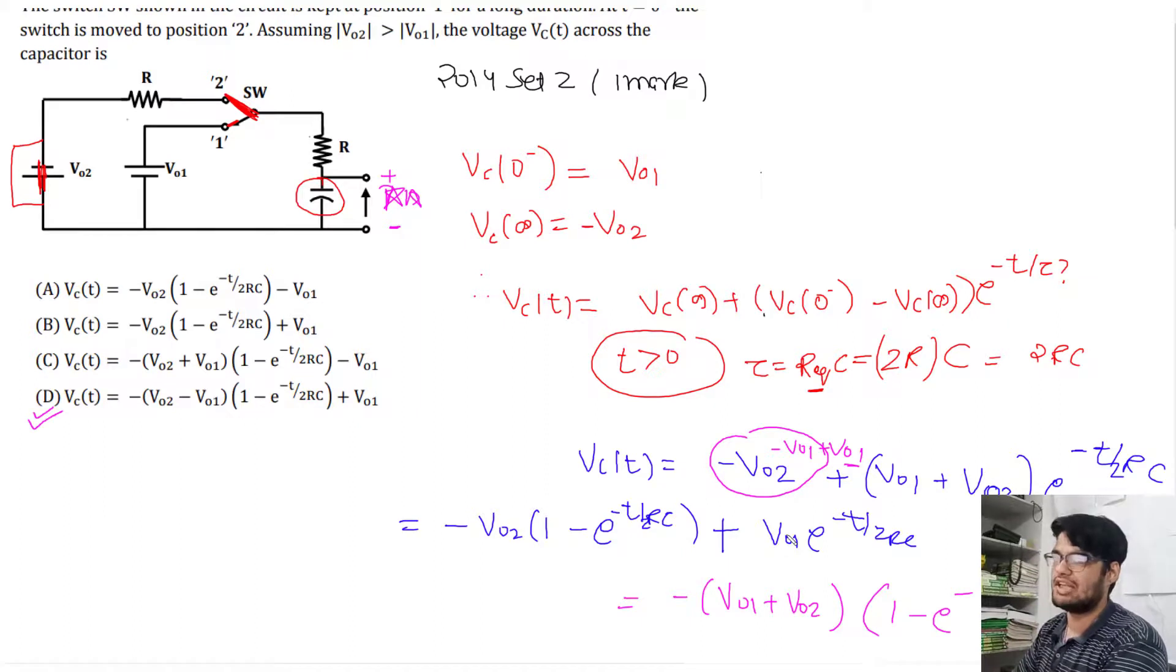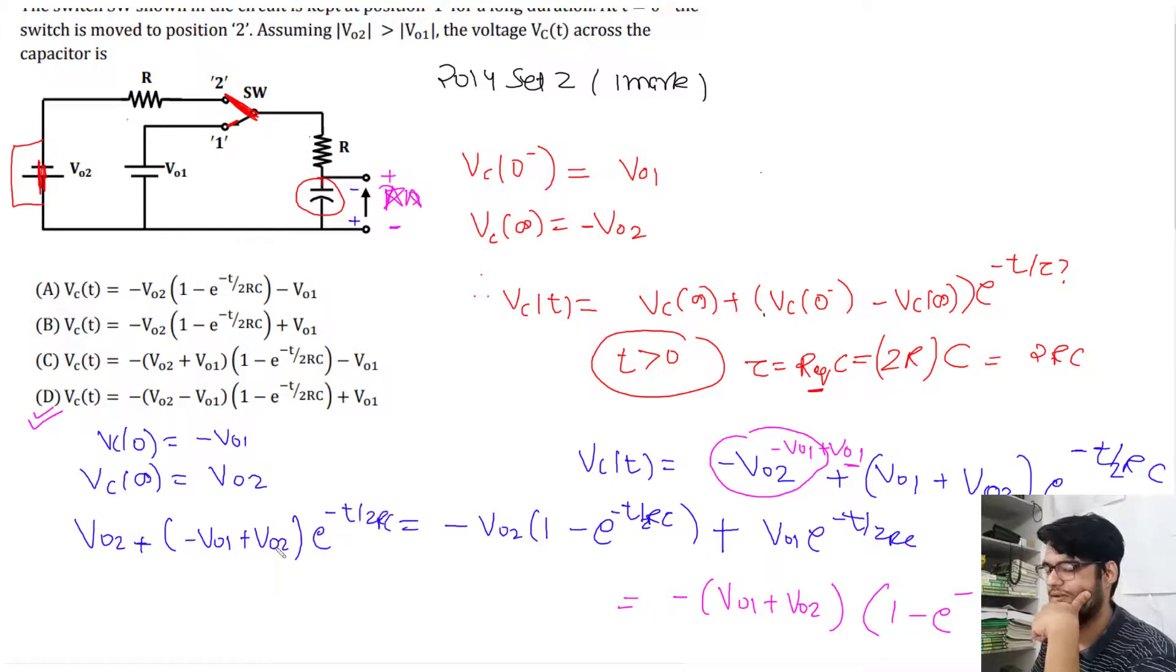When GATE's official answer key came out, the answer was D. How is that? Let me explain. They took the polarity in a different way - they assumed this direction. If this was assumed, then Vc(0) would be minus V01.